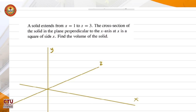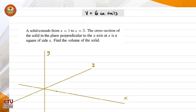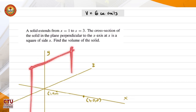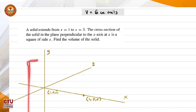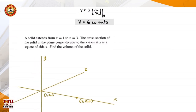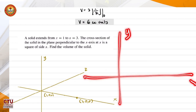There is a solid that extends from x equal to 1 to x equal to 3. The coordinate at one end is (1, 0, 0) and at the other is (3, 0, 0). For every value of x, the cross section perpendicular to the x-axis is a square. The plane perpendicular to the x-axis is the y-z plane — any plane perpendicular to the x-axis, oriented like this.